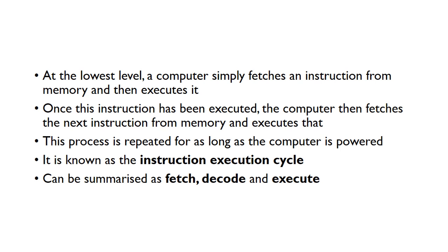At the lowest level, a computer simply fetches an instruction from memory and then executes it. Once it's executed that instruction, it then fetches another one from memory and executes that. This process is just repeated for as long as the computer is powered, and it's known as the instruction execution cycle. We can summarise this in three stages: fetch, decode, and execute.